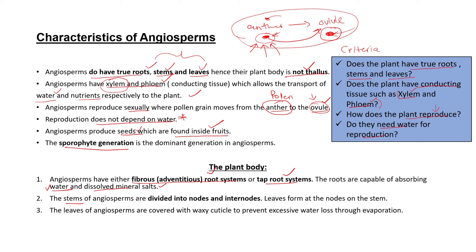The stems of angiosperms are divided into nodes and internodes. Leaves form at the nodes of the stem. For example, along the main stem there are nodes, and the sections between the nodes are called internodes. At each node you will find leaves growing out. So the stem is divided into these branching parts called nodes, and those nodes are separated by internodes.